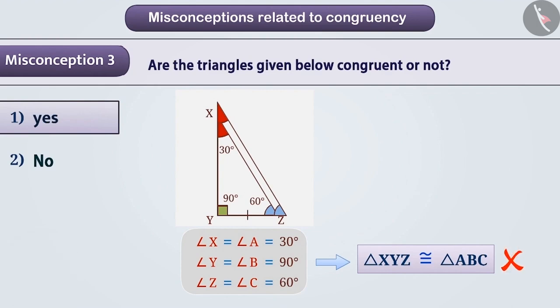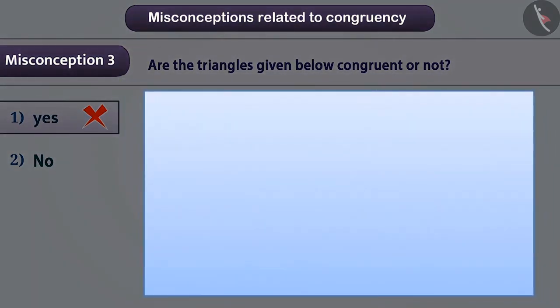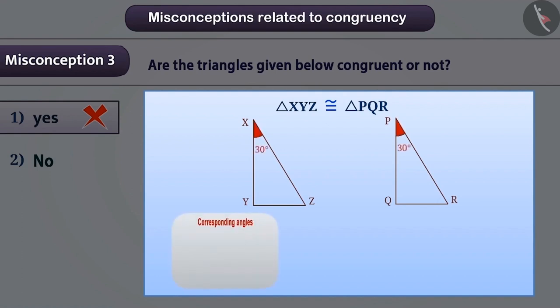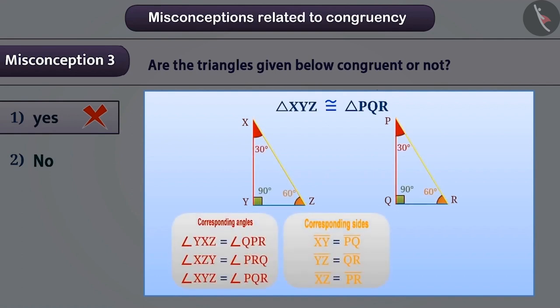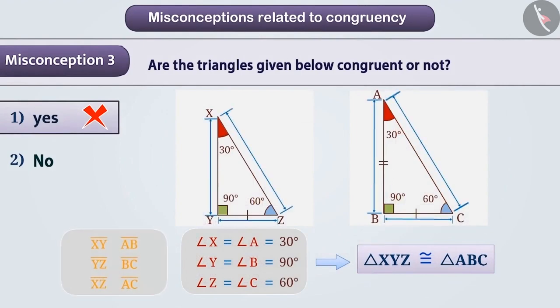Therefore, option 1 is the wrong answer. The correct understanding is that two triangles are congruent when their corresponding angles and corresponding sides are equal. And the corresponding vertices come right over each other. Since the lengths of the sides are not equal here, triangle XYZ is not congruent to triangle ABC. That is, the correct answer to the question given is option 2.